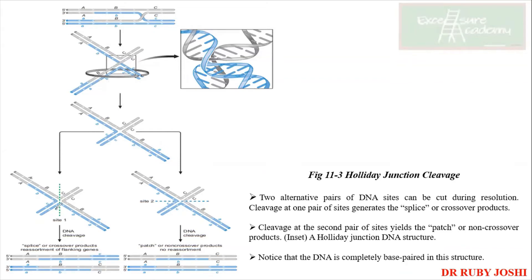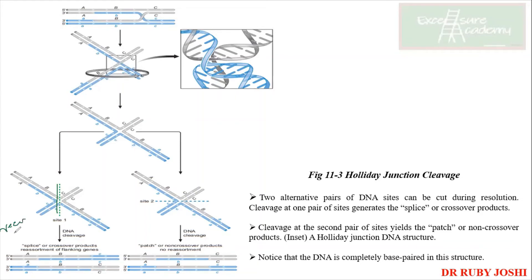If the cleavage is vertical, then the gray A-B strand and this blue strand get attached, giving capital A-B-C as one product and small a-capital B-C as another product, with small a-b and capital C as additional outcomes. These are known as splice or crossover products, because recombination has happened — the alleles have switched. So if the cut is vertical, you are going to get recombinant or splice or crossover products.